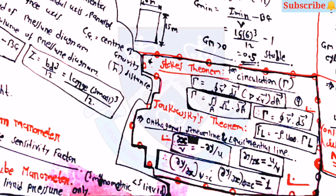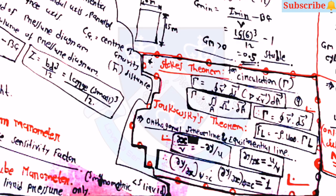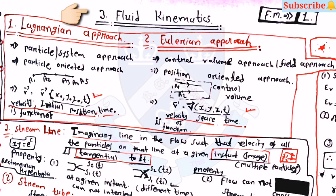There are some equations for Stokes' theorem, Kutta-Joukowski theorem, and orthogonal streamlines and equipotential lines. Two important equations are: dx by v equals minus dy by u, and dy by dx equals minus u by v. The multiplication of slopes equals minus one.